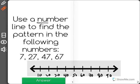The math problem says to use a number line to find the pattern in the following numbers: 7, 27, 47, 67.